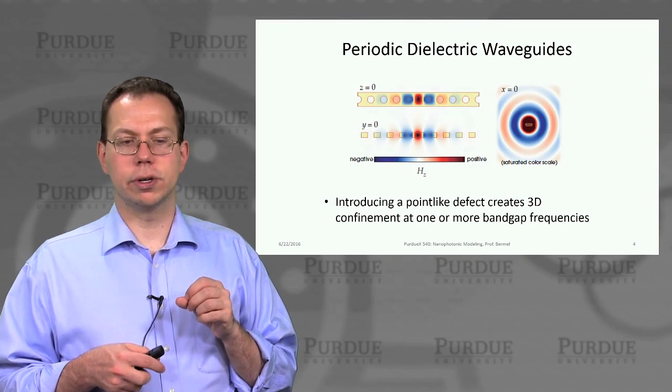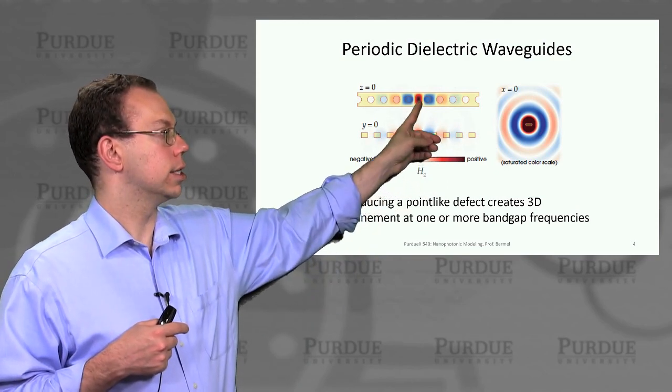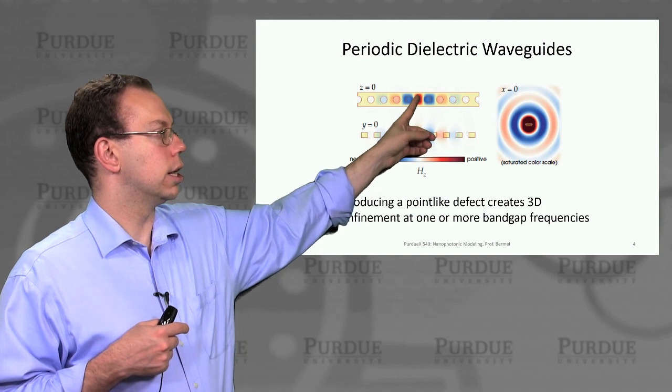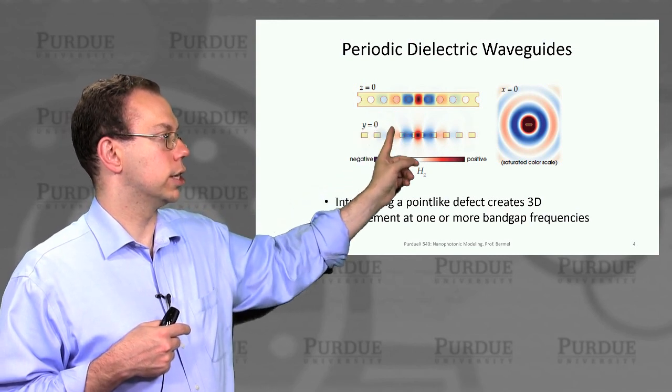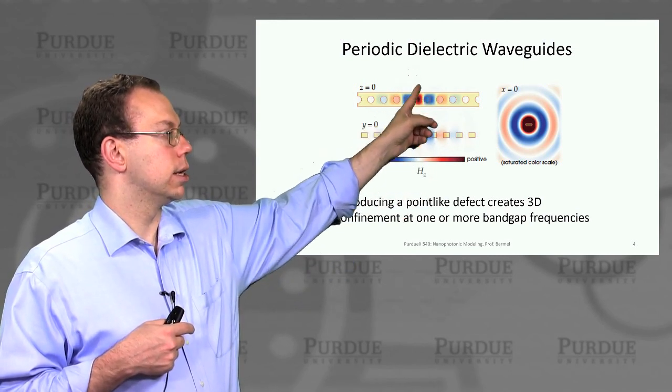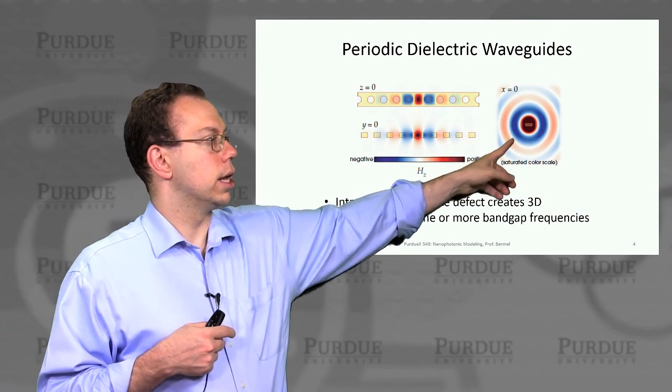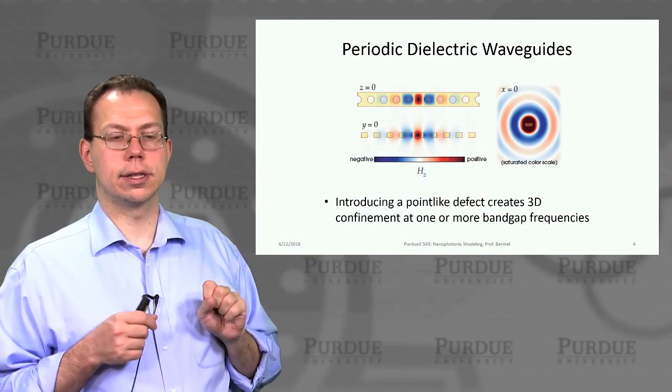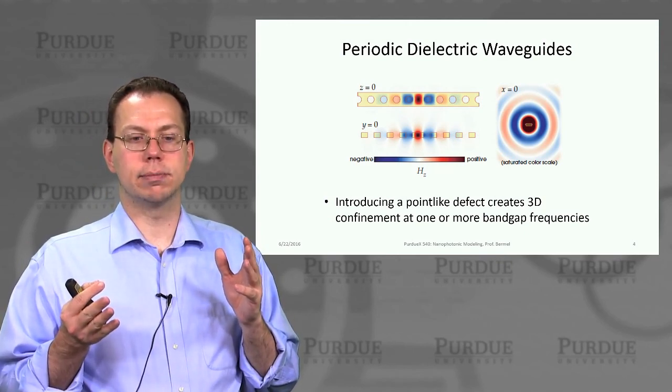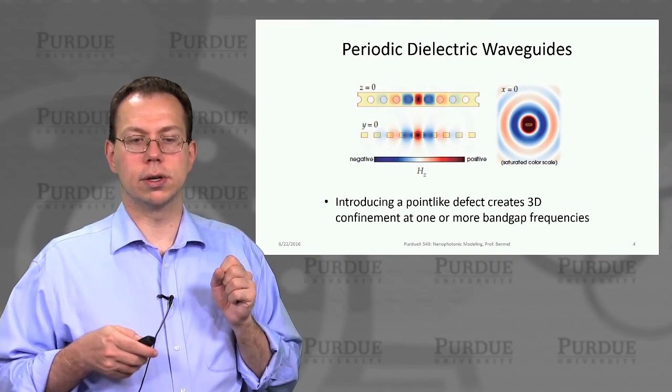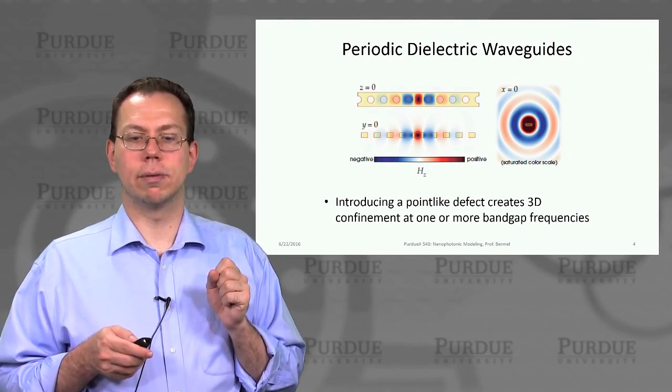And so this is an example of what a structure like this with one defect, which helps to localize light, would look like. You can see there's a very strong concentration of the fields right at this defect point here, and then you have a rapid decay as you go in this x direction. And you also have good confinement in both the y direction here and then in the z direction, you can see from this other cross section. And then if you look at it from x equals zero, kind of down the line, you can see it's radiating. So it's actually radiating like a monopole. And then this creates 3D confinement at one or more of the band gap frequencies.